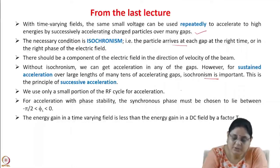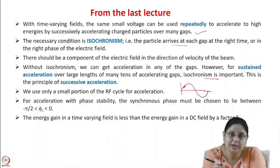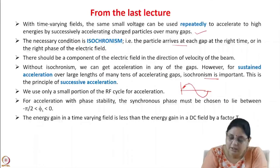We do not use the entire positive cycle for acceleration — we use only a small portion, because if you use the entire cycle then you will get a large deviation in kinetic energy for the particles, which we do not want. Also, even though the entire positive cycle produces acceleration in the region from 0 to π/2, there is no phase stability.